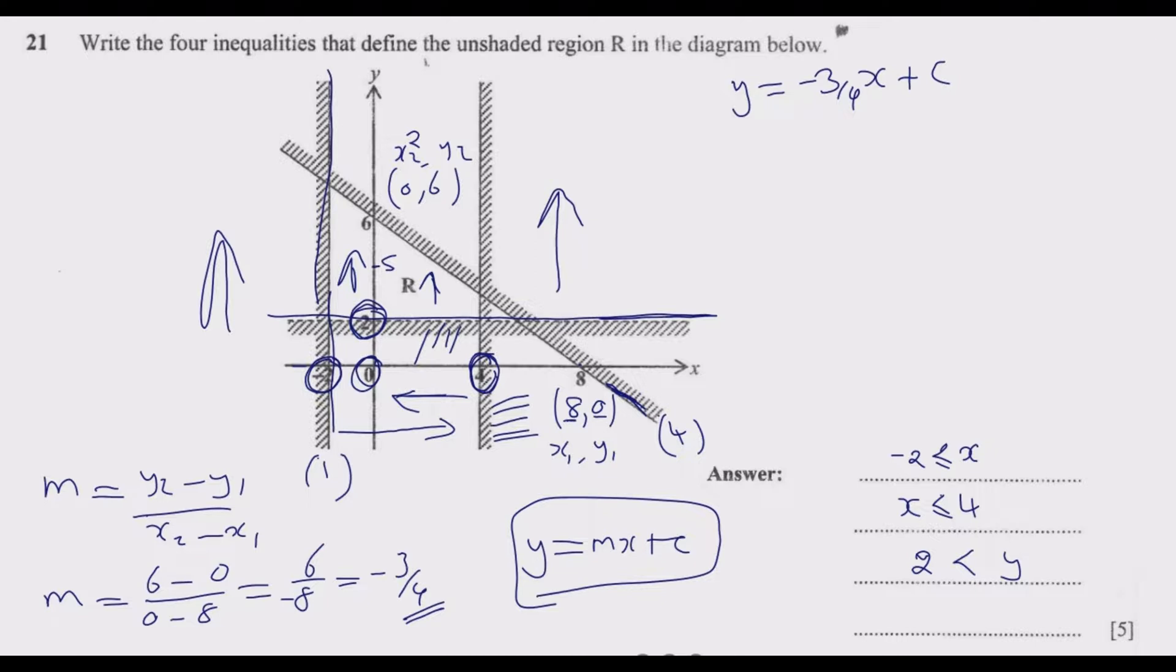To find C, we pick any point among these two points. Let us pick this one where X is 0, which is easier. The value of Y is 6 when X equals 0. So 6 equals negative 3 over 4 multiplied by 0 plus C. Zero times anything is 0, so 6 equals C.